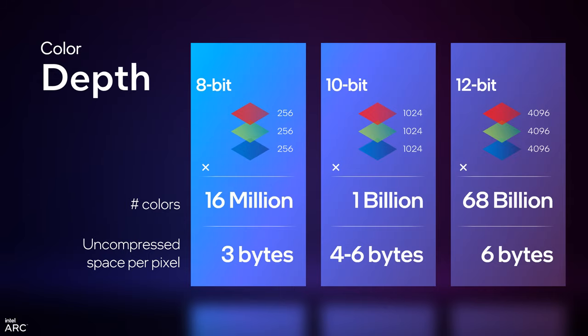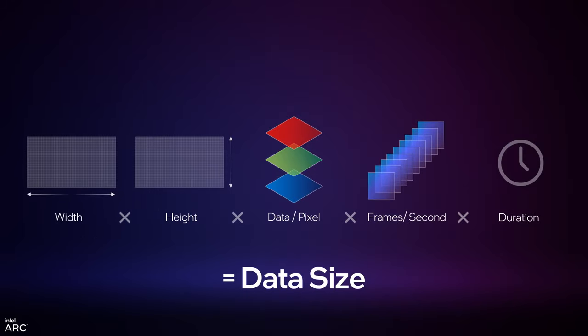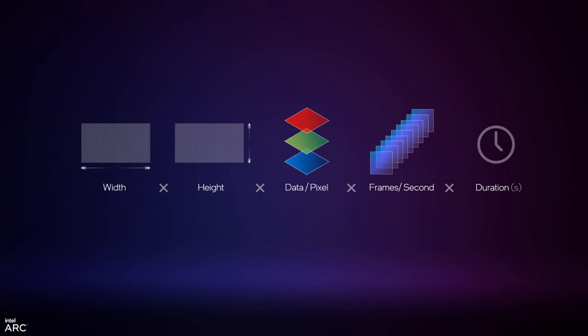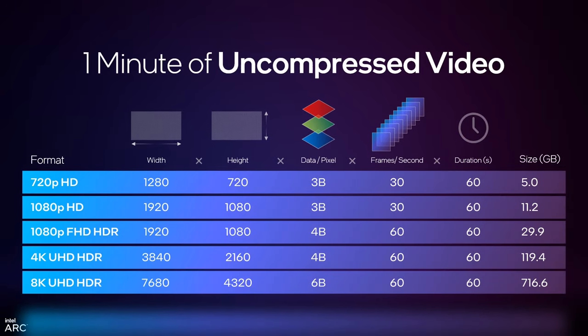It takes more storage to store bigger color bits. If you multiply it all together — width times height times color setting times frames per second times duration — that's how big things get. Apply this to 1080p HD: 1920×1080, 3 bytes per pixel, 30 frames per second, 60 seconds — you get 11 gigabytes for one minute of video. It gets big really fast.